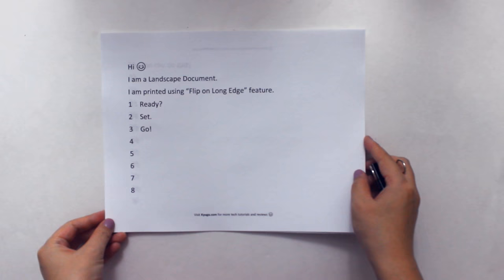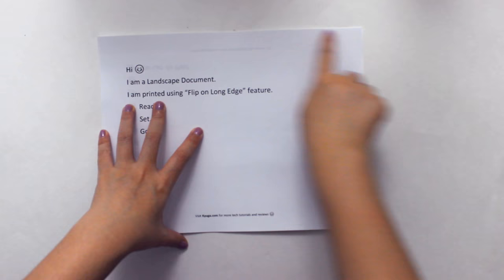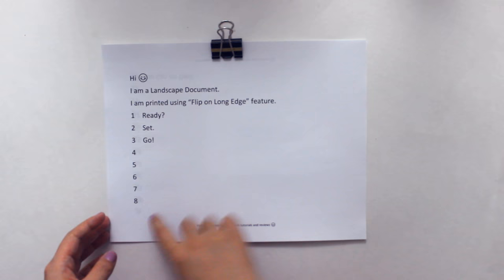Now let's take a look at our landscape document. We will flip on the long edge, so I will place my paper clip here. This is what it looks like when we print using the flip on long edge function on a landscape document.